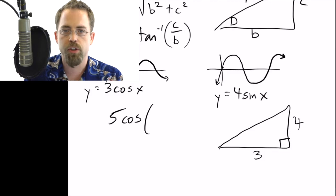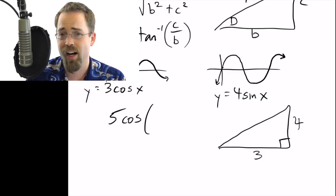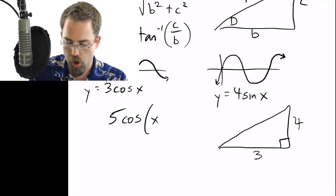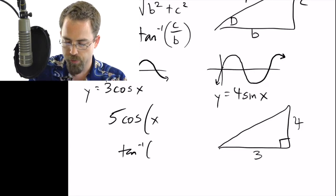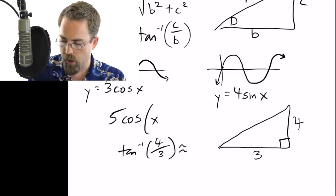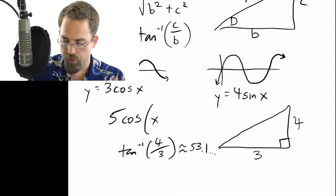And then how much have we shifted it left and right? Well, I picked one where the sides were nice numbers, so then the angles aren't. If you do arc tangent of four over three, you get something close to 53.1 on and on. So we'll just go with 53 for now. So minus 53.1.